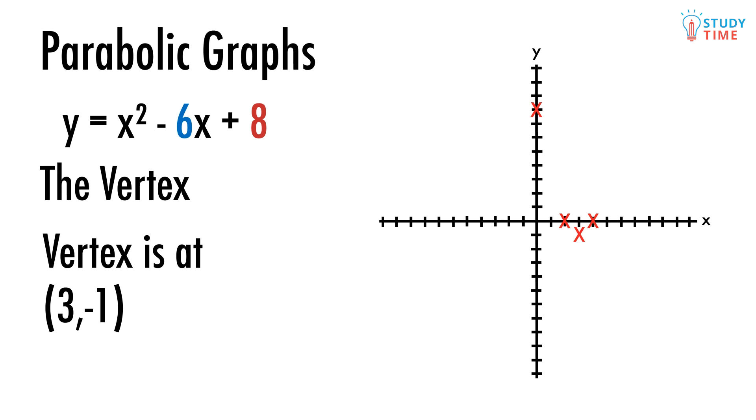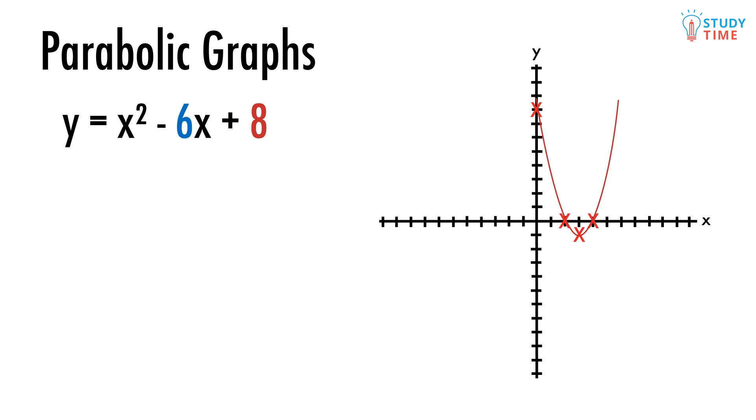Time to carefully draw a smooth curve that represents our parabola. You should be aware that a quadratic with a negative x squared will create an upside-down parabola. We'd have the same parabola as before, but flipped, with the x-intercepts staying the same.